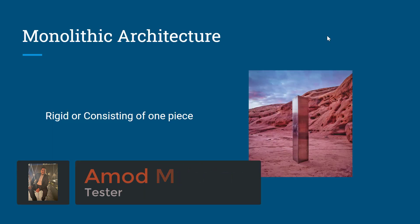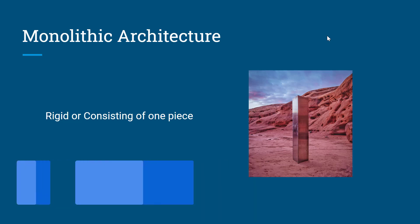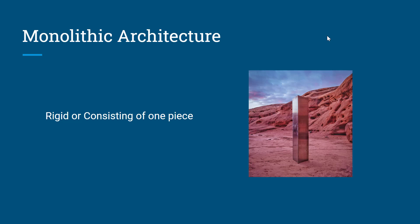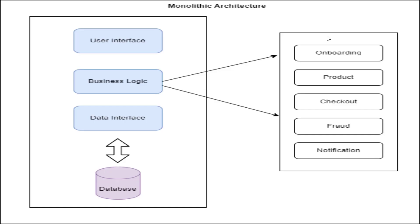So let's see about monolithic architecture in detail. Monolithic means rigid or consisting of one piece, as you can see in the image on the right-hand side. In this one piece, we have all the components. Generally we have a user interface which we can open in any browser using your laptop or mobile devices, then we have the business logic, then a data interface, and after that we have a database where we store the data. This business logic can have multiple components like onboarding, product, checkout, fraud, notification, etc. All these business logics are developed together within the same codebase.